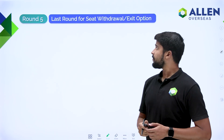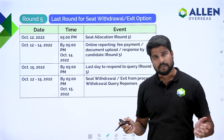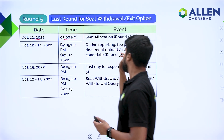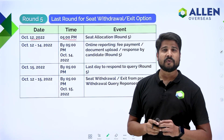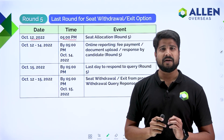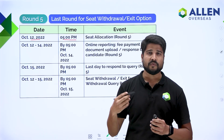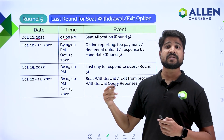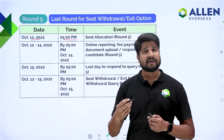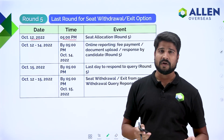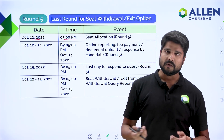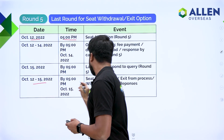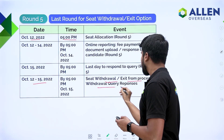Round 5 is an important round — it is the last round for seat withdrawal and exit option. Round 5 will start from 12th October at 5 pm. If you want to withdraw your seat from any allotment across different JOSAA rounds, this is the last opportunity. This is the final round for seat withdrawal specifically for IIT colleges. For NIT plus system there will be another round, but Round 5 is the last round for seat withdrawal. From 12th to 15th October, you can withdraw your seat, exit from the process, and withdraw query responses.